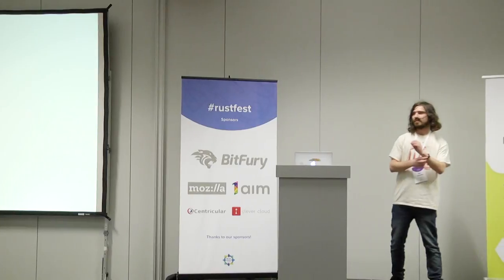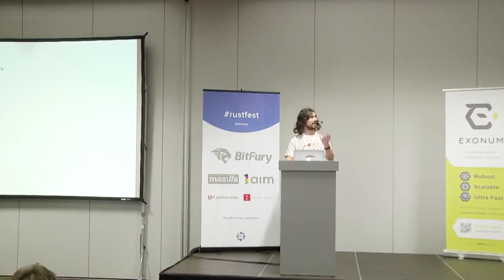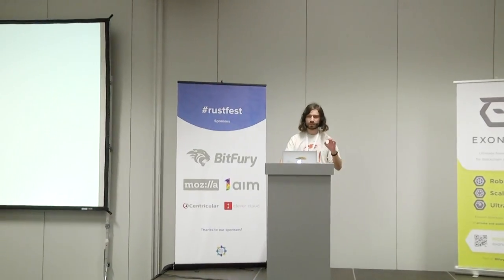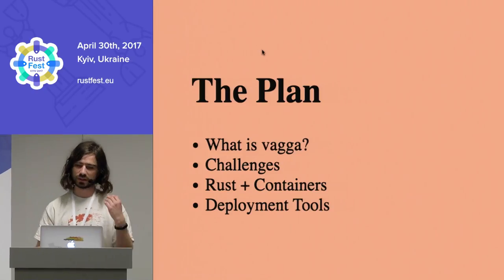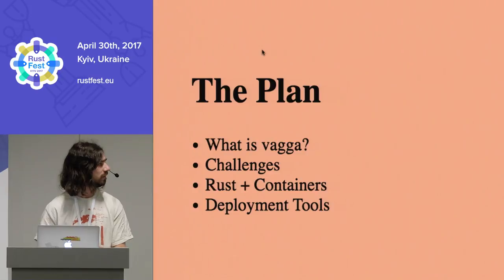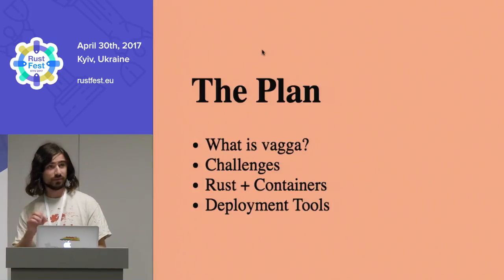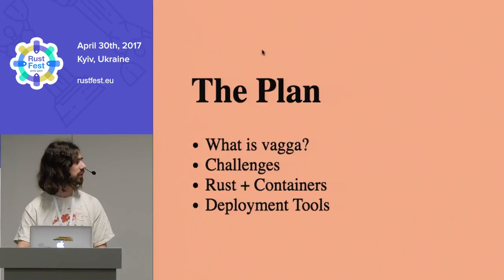Hello everyone. My talk will be not so technical, but I think it will be interesting. The plan is we will talk a little bit about what WAGA is and what problems it solves, then about some Rust challenges and container things we had to solve, then about libraries we've done in the process of coding WAGA, and if we have time, about deployment tools which complement WAGA itself.